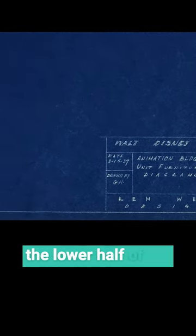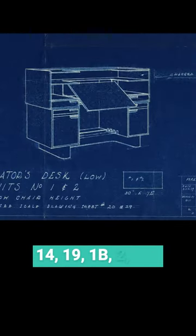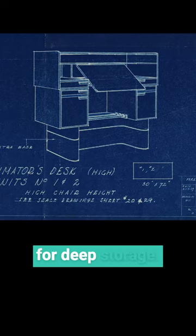The deep drawers in the lower half of the desks, units number 14, 19, 1B, 2, and 2A, were designed for deep storage.